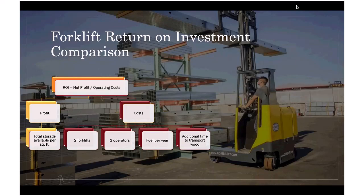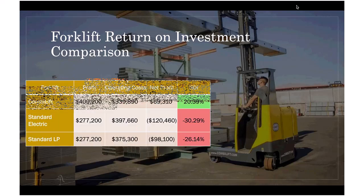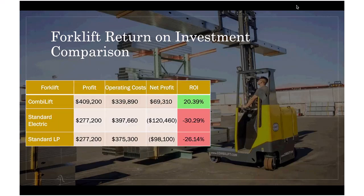To accommodate the needs of our final layout, ROI comparison between three different forklifts was done. The inputs of these results included net profit and operating costs such as two forklifts, two operators, and fuel per year, and also additional time for wood transportation. The only positive ROI with 20.4% is generated if we pick the combo lift forklift, while the other ones will generate negative ROI.